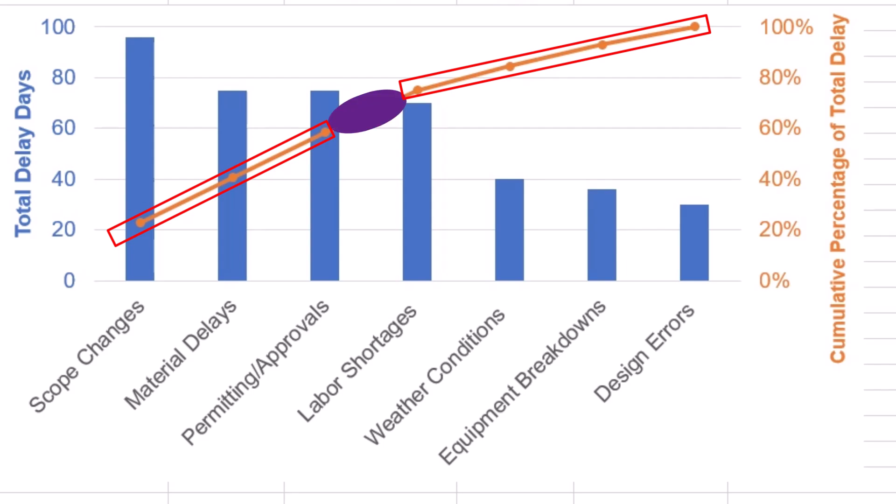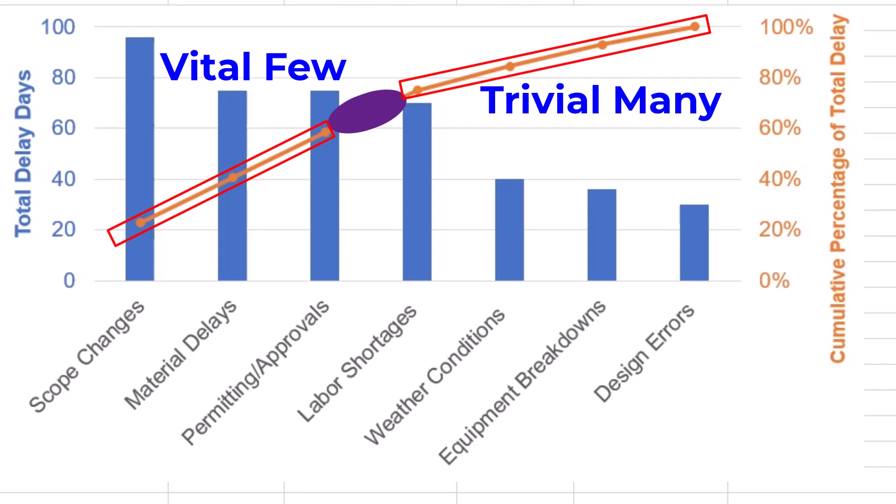You can also visually identify the knee of the curve — the point where the cumulative percentage line starts to flatten out. This roughly separates the vital few from the trivial many. Everything to the left of the knee is your high-impact zone where you must focus. This Pareto analysis is a powerful prioritization tool that tells us where to focus our efforts for maximum impact.